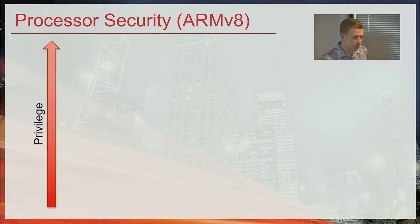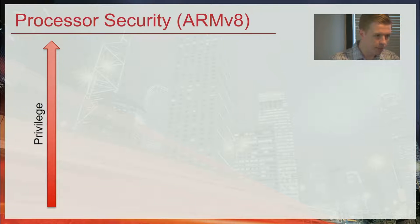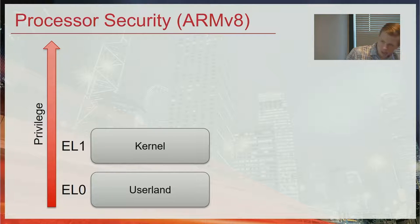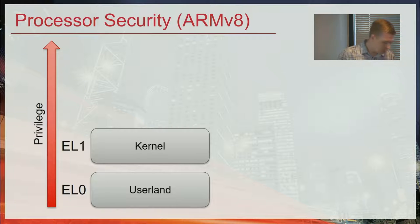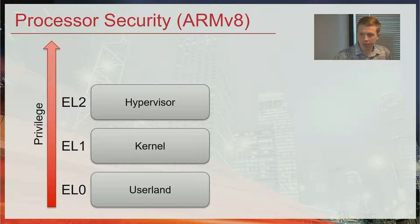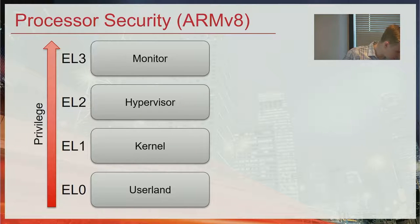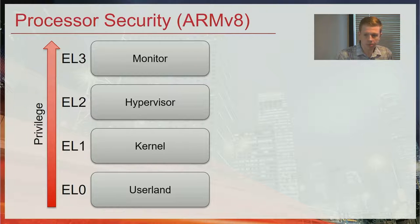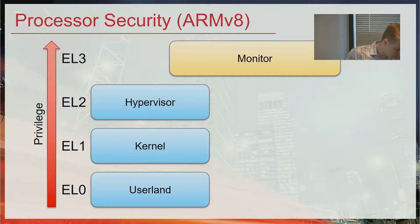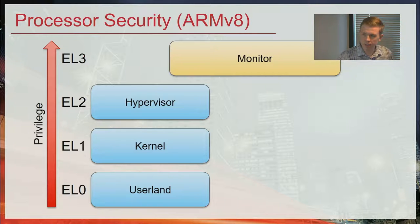ARMv8 is completely different and is commonly used in modern high-end cell phones. They got a few things right compared to x86 right off the bat. Instead of starting at ring 0 as the most privileged and adding negative rings, they flip it around. The user land is at exception level 0 and the kernel is at exception level 1. If we need a more privileged level, we just add exception level 2 — no more negative numbers. In ARM, exception level 2 is the hypervisor and exception level 3 is the monitor.